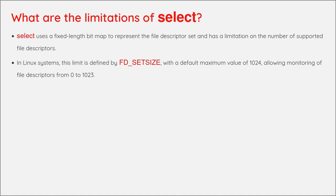What are the limitations of SELECT? SELECT uses a fixed-length bitmap to represent the file descriptor set and has a limitation on the number of supported file descriptors. In Linux systems, this limit is defined by FD_SET_SIZE, with a default maximum value of 1024, allowing monitoring of file descriptors from 0 to 1023.